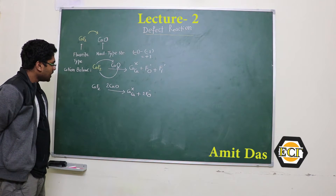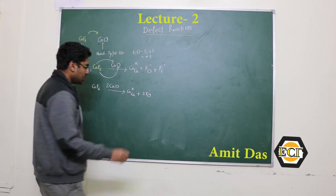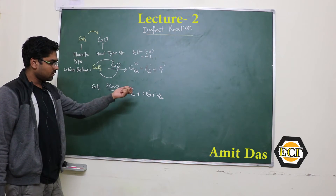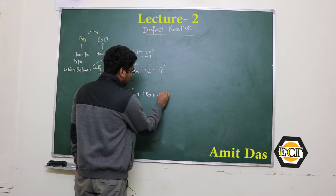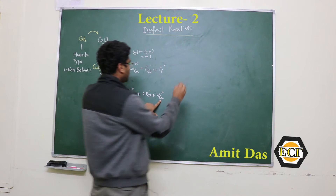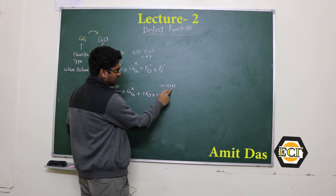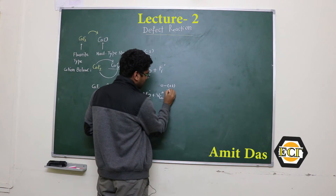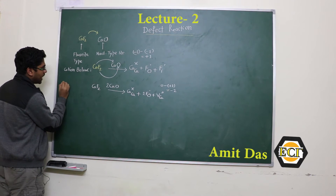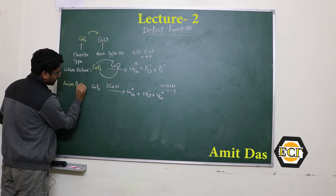We must balance this from a charge neutrality point of view. Since the anion side is balanced, one cation must be balanced, so we write a vacancy on the calcium site. The effective charge of a cation vacancy is minus two, because if we consider the vacancy has no charge and calcium has a plus-two charge, the overall effective charge is zero minus (+2) = −2, denoted by two dashes. This is the anion-balance reaction.